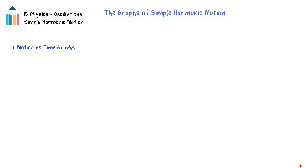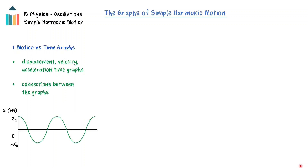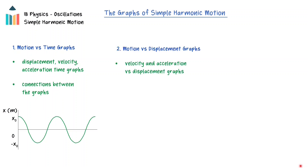In this video, we will explore the motion of a simple harmonic oscillator graphically. First, we will examine the motion of the oscillator with respect to time. The displacement, velocity, and acceleration time graphs will be explained and the connections between them explored. Secondly, the velocity and acceleration as a function of displacement graphs will be described, and the relationship between the acceleration displacement graph and the defining equation of simple harmonic motion will be explained.